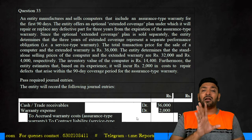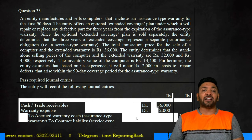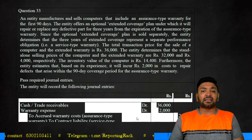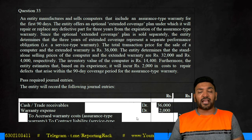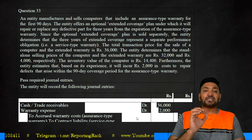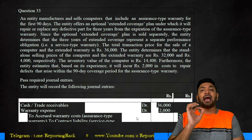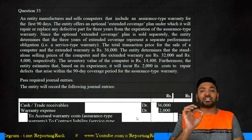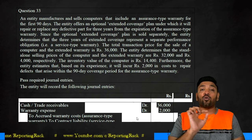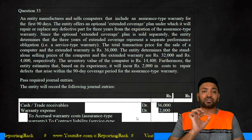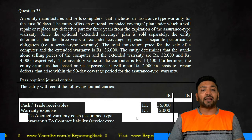Since the optional extended coverage plan is sold separately, the entity determines that the three-year extended coverage represents a separate performance obligation. Since it is sold separately, it must be treated as a separate performance obligation, and revenue from that extended coverage should be recognized over the entire period of the coverage, that is, over three years.